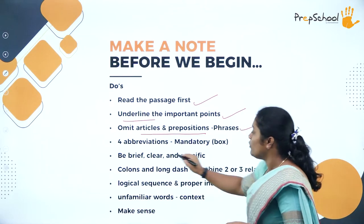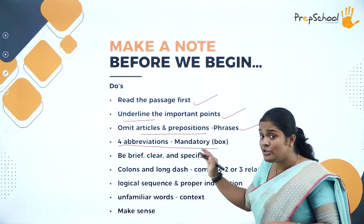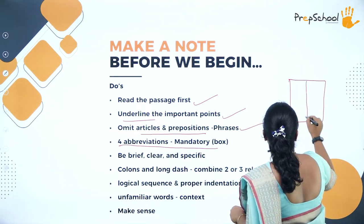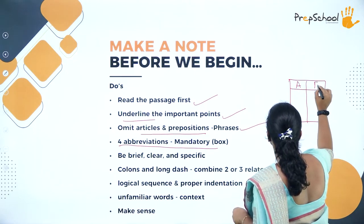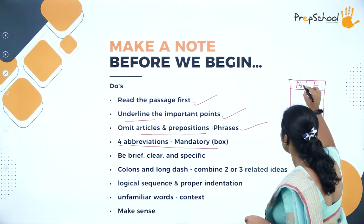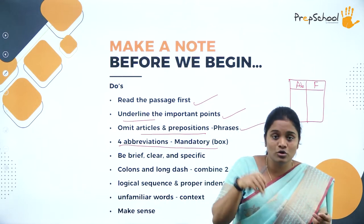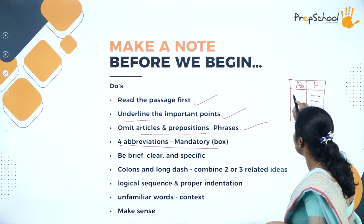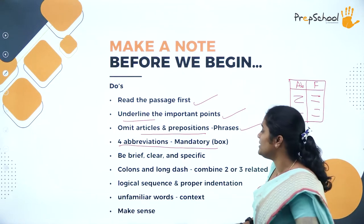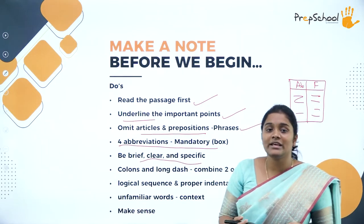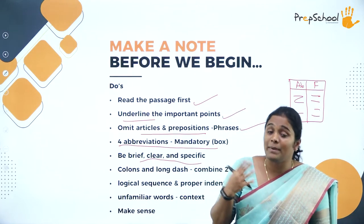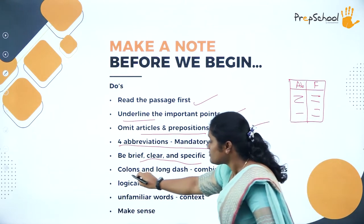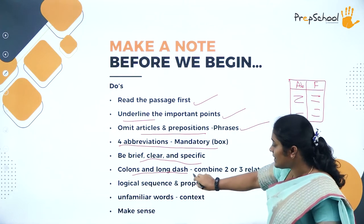Four abbreviations are mandatory. At the end of your note-making, create a box and write all abbreviations on one side and full forms on the other side, so when you go back to your note it makes sense. Whatever abbreviations you have customized, put the full forms there. Be brief, clear, and specific — note-making is not like essay writing where you go on writing pages and paragraphs. It should be on point, very objective. You can also use colons and long dashes to combine two or three related ideas together.